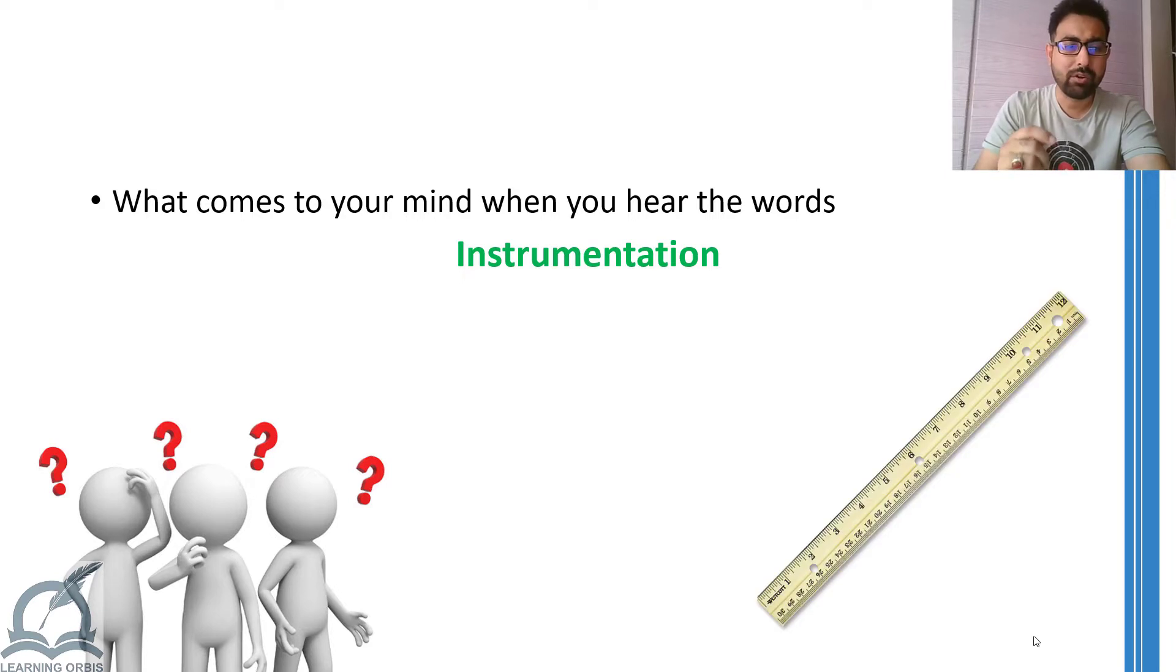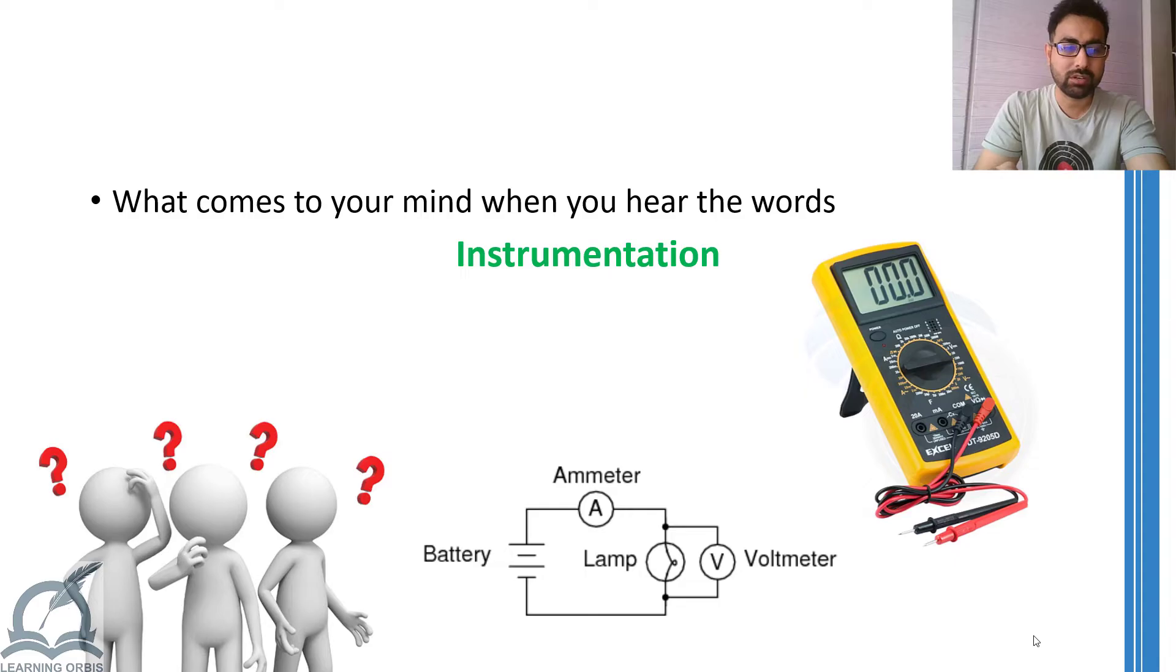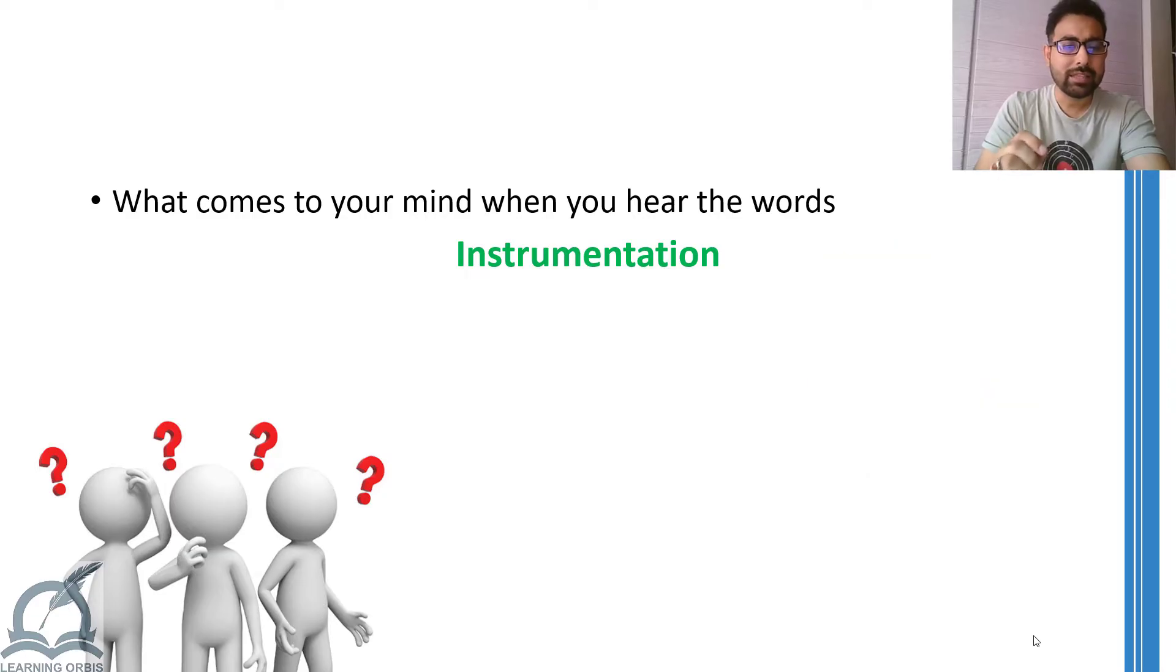For example, a simple ruler is an instrument because we can measure length using it. Or a voltmeter is an instrument that allows us to measure voltage in some part of the electric circuit. So, these are the instruments and use of these instruments is called instrumentation.